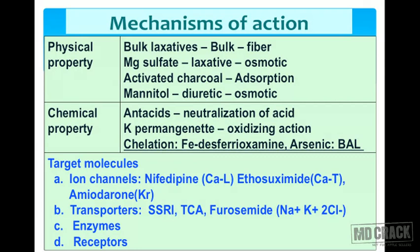Important ion channels include the L-type calcium channels in the cardiovascular system, acted on by nifedipine; T-type calcium channels in the central nervous system, acted on by ethosuximide for absence seizures; and amiodarone, a class 3 antiarrhythmic agent, acts on outward potassium current.